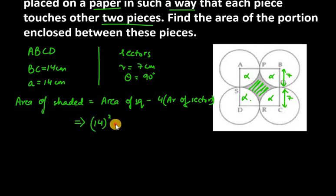It will be 14 square, side square, minus four into area of sector. Theta is how much? 90. So 90 over 360 into pi r square, pi is 22 over 7, r square is 7 square.